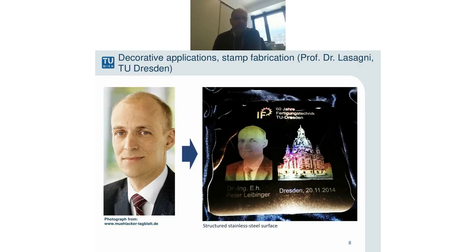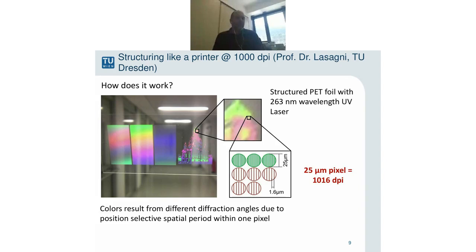Going further, also from my colleagues' group, you can use this technique for holography — for anti-plagiarism tools where you can imprint logos and pictures. The colleagues in Dresden approach this like a printing process with different pixels. Depending on the periodicity of line patterns within each pixel, and the diffraction angle and position where you look, you can see different colors. Assembling all these, you can create this example of the famous Dresdner Frauenkirche church in Dresden.